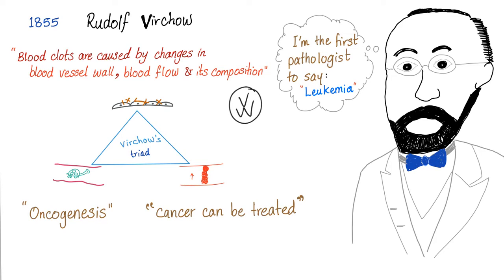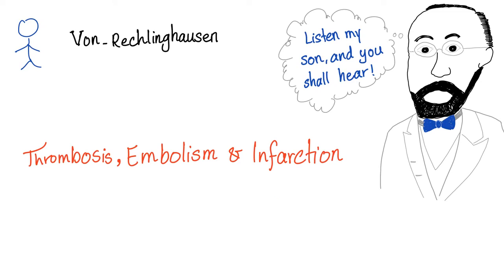He's old school — old school glasses, old school suit, old school beard with no wax. Hashtag all natural. He was not only a great scientist but also a great mentor. His student, von Recklinghausen, discovered thrombosis, embolism, and infarction. As a trick question: there is a disease called von Recklinghausen's disease — and the answer is neurofibromatosis type 1.